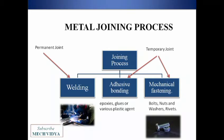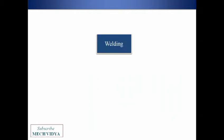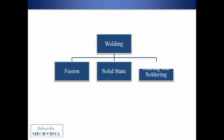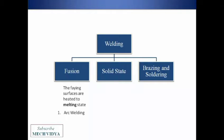There are primarily three types of welding: fusion welding, solid state welding, and brazing and soldering. In fusion welding, we melt the joining edges and then a permanent bond is produced. Examples of fusion welding are gas welding and various variants of arc welding.